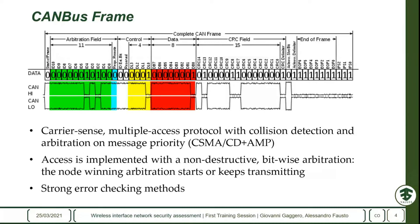The CAN frame bases media access on a Carrier Sense Multiple Access strategy. For example, if two nodes start transmitting simultaneously, access is managed through the arbitration field. If one node has priority level four and another has priority level five, the first node transmitting a dominant zero causes the other to stop its own transmission. The frame also includes a large CRC field, implementing strong error checking.